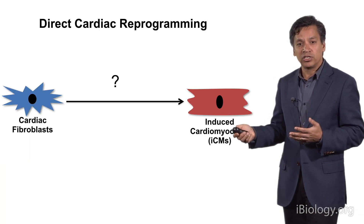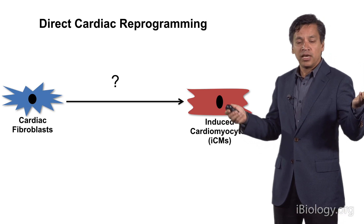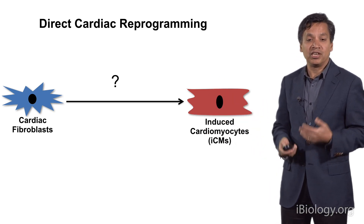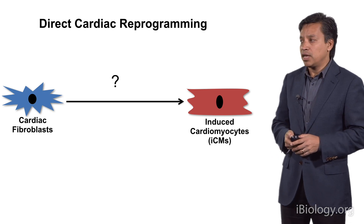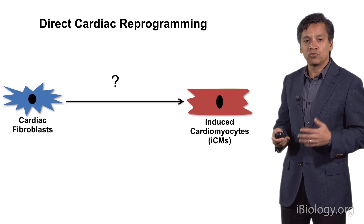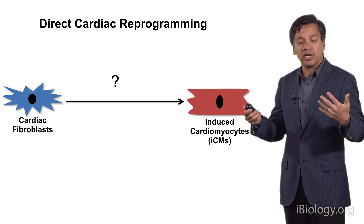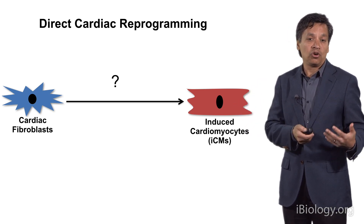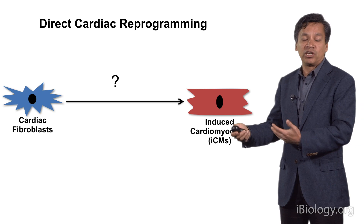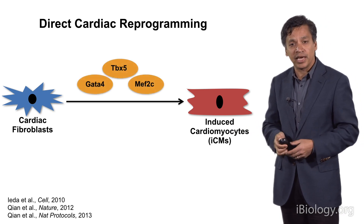The question is: can we take a cardiac fibroblast and convert it into what we've called an induced cardiomyocyte-like cell? To do this we really relied upon all of these developmental biology networks, because we thought we'd learn from nature — how nature normally does it — and maybe we could redeploy the key factors in a dish. And that turned out to be the case.